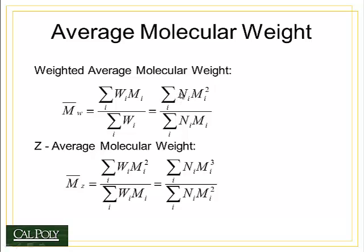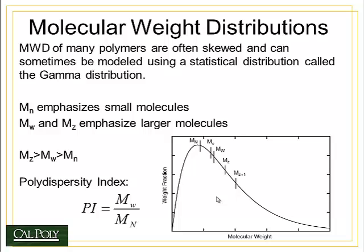An alternative is the weight average molecular weight, M-sub-w. Here we take the sum of the number of molecules in a bin times the molecular mass of that bin squared, divided by the sum of the number of molecules in a bin times the molecular mass of that bin. Finally, there is the z-average molecular weight, M-sub-z, which cubes the molecular mass in the numerator and squares it in the denominator.